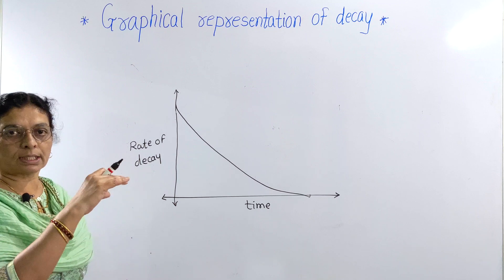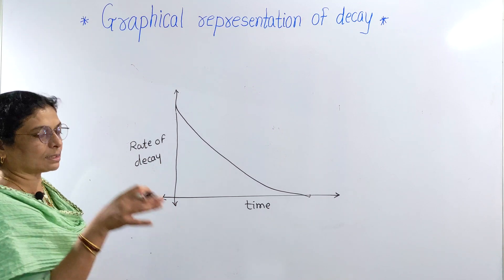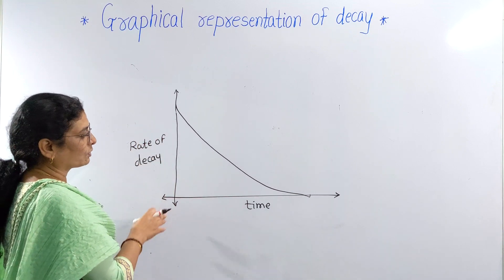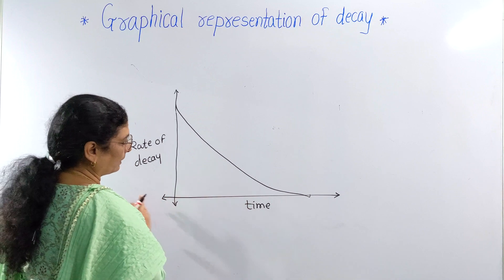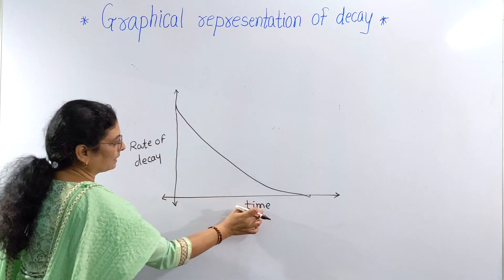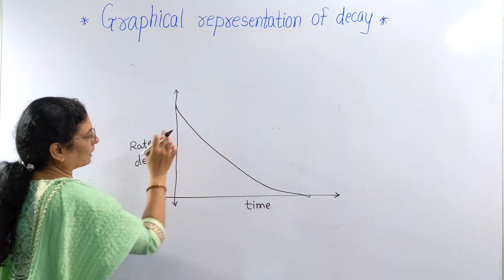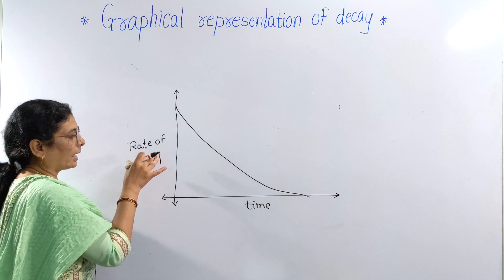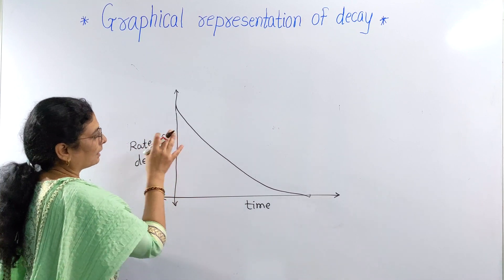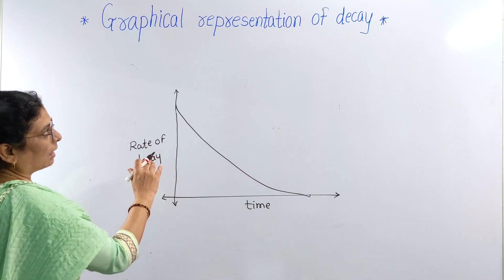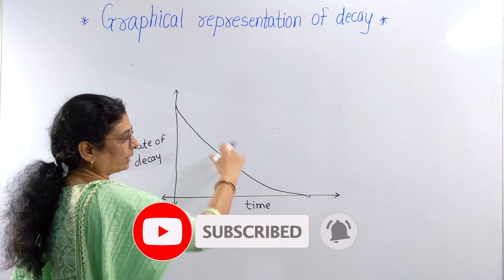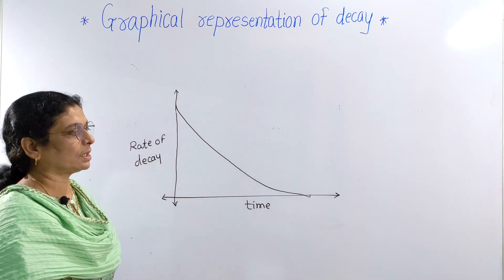As the number of radioactive atoms decreases, the rate of decay also decreases. As time increases, the rate of decay goes on decreasing because it depends upon the number of radioactive atoms. From these two graphs, we can explain how decay takes place, how the rate of decay depends upon time, how the rate of decay decreases, and how we can obtain the value of lambda (the decay constant) from the slope of the line.